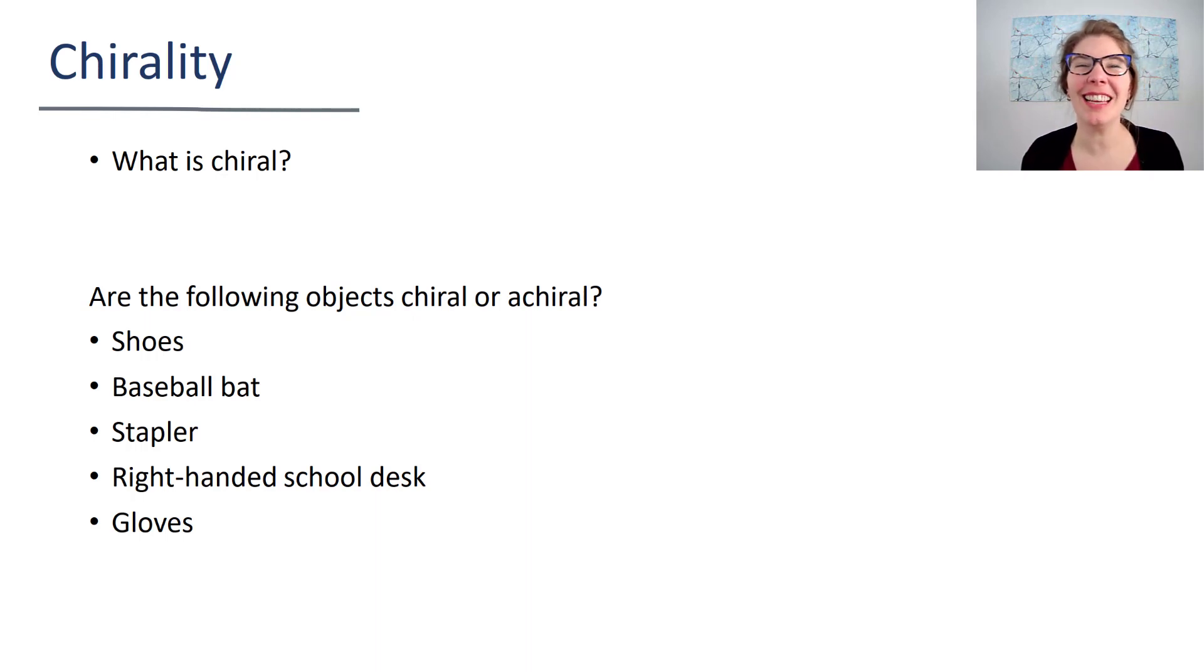So chirality is talking about when you have a molecule or a real life item where its mirror image of the item is no longer the same as the original object. Now let's look at some real life examples and ask ourselves if these things are chiral or achiral. Keeping in mind that achiral, when you put the 'a' out in front of chiral, it means not chiral. So are the following objects chiral or not chiral?